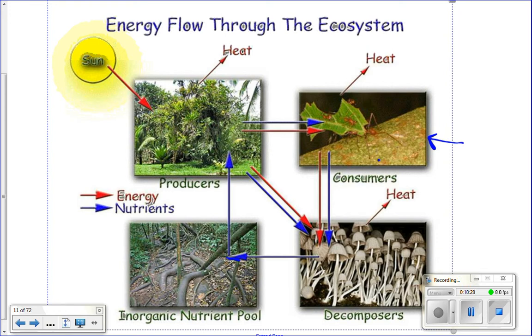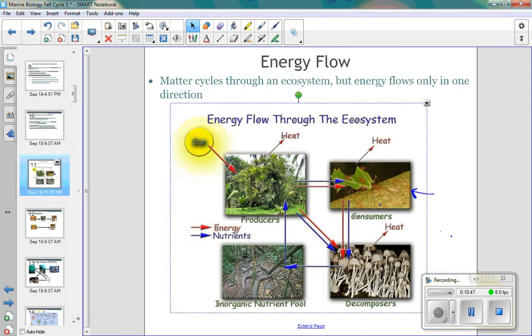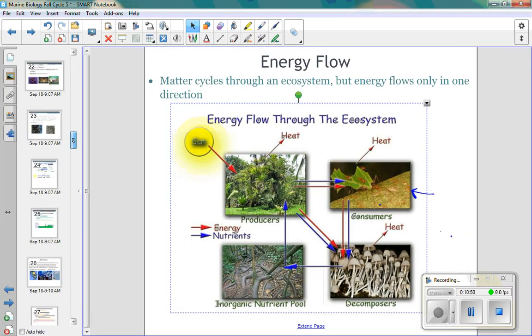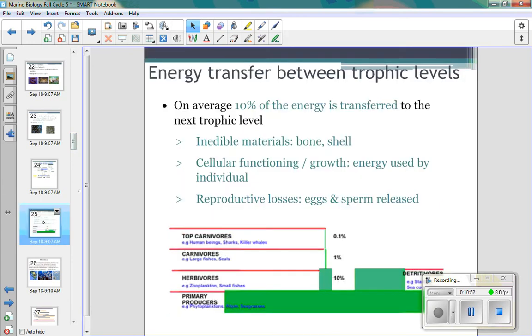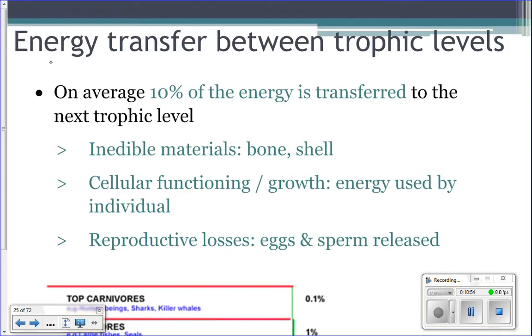Energy only goes one way, and the matter gets recycled. That's why we need a perpetual input of energy into our ecosystem. And the reason why energy only goes one way is because at each level in the food chain, each trophic level, you lose energy. So only about 10% of the energy from one trophic level to the next is passed on. And there's three major reasons why only 10% gets passed on.